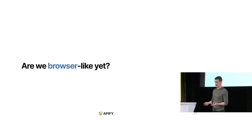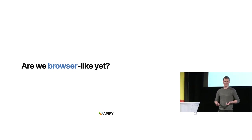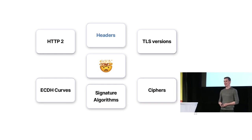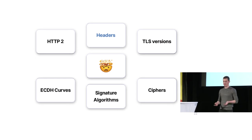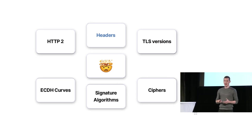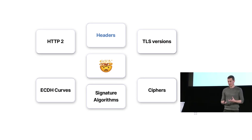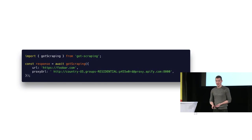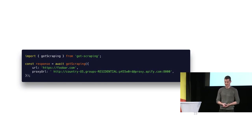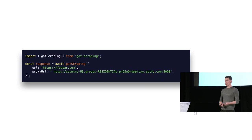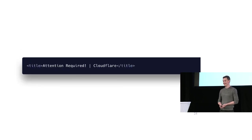So does that mean we're browser-like? Does it mean we're human? Not yet. There are many more things to figure out before you look like a browser. First: HTTP/2 is now used in all browsers, so if you use HTTP/1, you're basically flagging yourself as a bot. Then there are TLS versions, ciphers, and signature algorithms — a lot of things that browsers use that normal HTTP clients in Python, JavaScript, or any language don't do by default. So we decided to build a library called gotscraping, because 'got' is one of the most popular HTTP clients for Node.js. We tried to open foobar with it. Still no — it doesn't work.